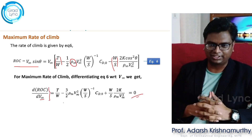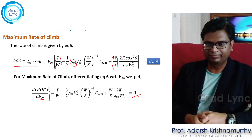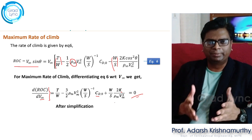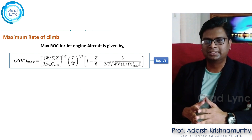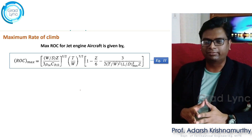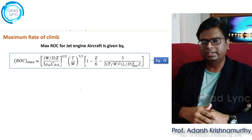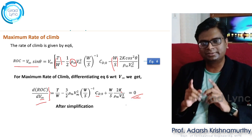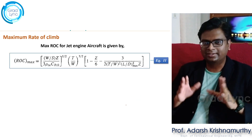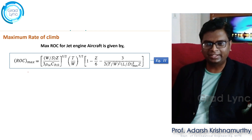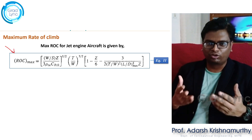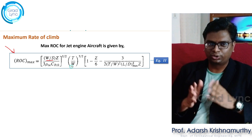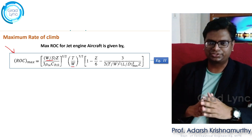If I differentiate, I will get this term: thrust-to-weight ratio, 1 divided by W/S (wing loading), CD_naught — these are all the important parameters on which the maximum rate of climb depends. The simplification I will leave as homework; it is simple mathematics. So I have differentiated the rate of climb equation with respect to velocity and equated it to zero — this is the condition for maximum rate of climb. I then get the expression for velocity and substitute it back to get the maximum rate of climb. The equation depends on wing loading (under the root), thrust-to-weight ratio to the power of 3/2, and thrust-to-weight ratio within brackets.